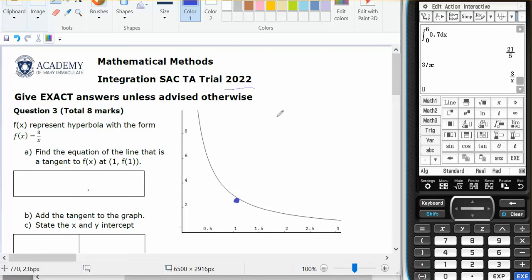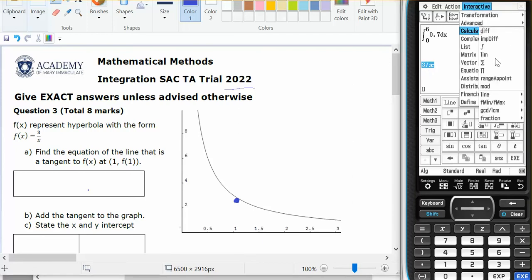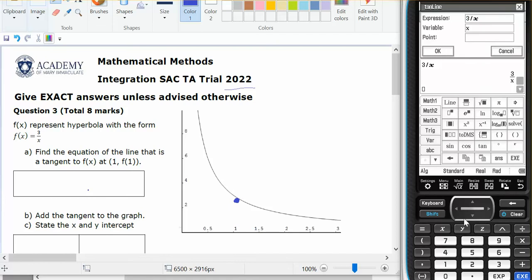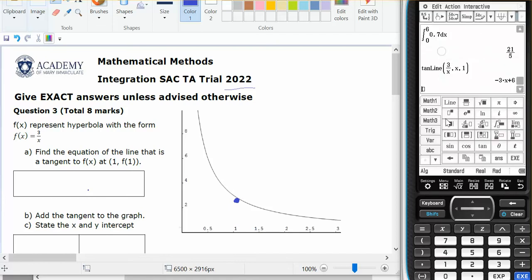Okay, so I'm going to use tan line. We're going to select 3 over x, interactive calculation, line tan line at x equals 1, and that tells me the line is minus 3x plus 6.